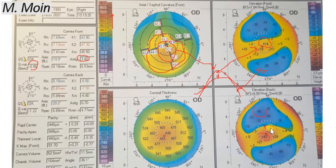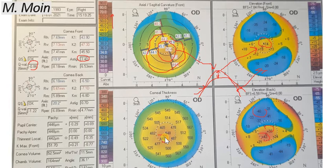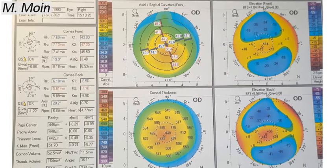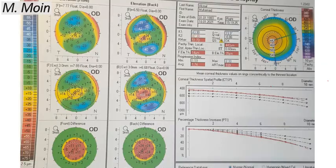The pachymetry map shows a minimum of 446 microns, consistent with the earlier measurement. The thinning is localized to the cone. This patient does not have extreme thinning down to 350 microns. Importantly, for corneal collagen cross-linking, the pachymetry needs to be above 400 microns, which this patient meets. That covers the essential parameters for a quick reading of corneal topography. On a Galilei display, you would also have a Keratoconus Index (KPI).